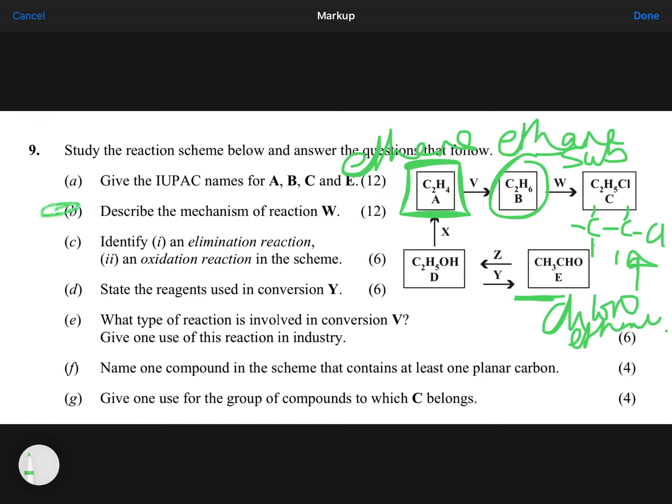Describing the mechanism for reaction W, now that's your free radical substitution mechanism that you're describing there. Between ethane and chlorine, forming chloroethane and hydrogen chloride gas. Remember that one of the products is a gas, that hydrogen chloride is a gas.